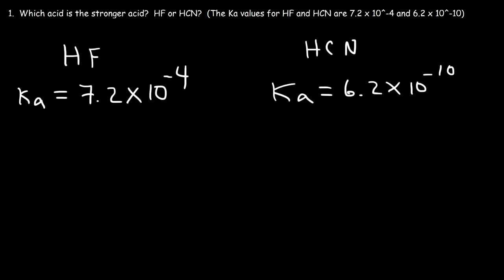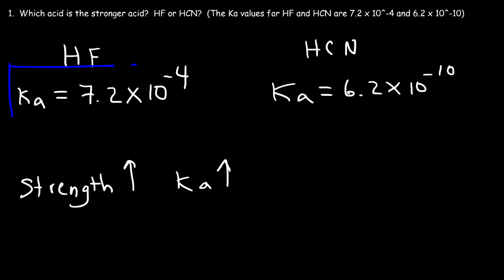Given the Ka values, which one is the stronger acid? Acid strength increases with increasing Ka values, so the acid with the higher Ka value is going to be the stronger acid. Since 10 to the minus 4 is greater than 10 to the negative 10, HF is therefore a stronger acid than HCN.